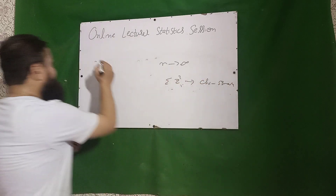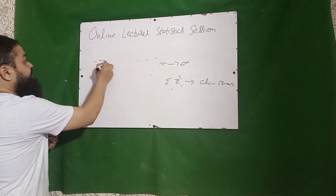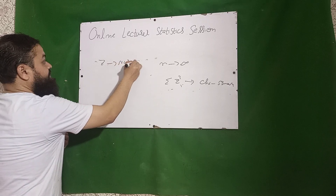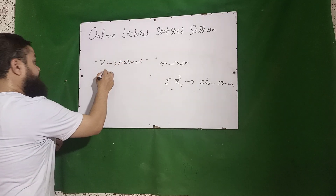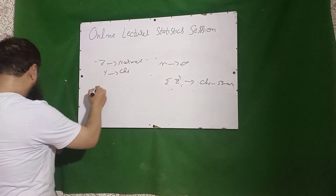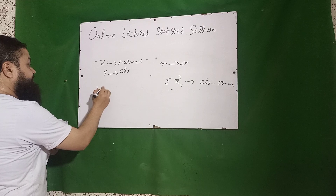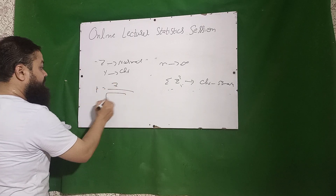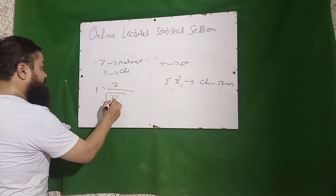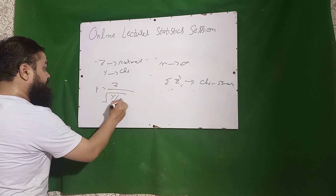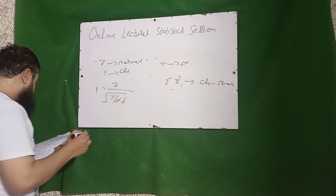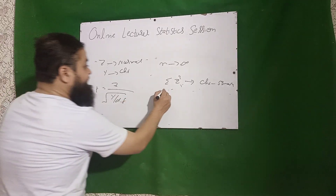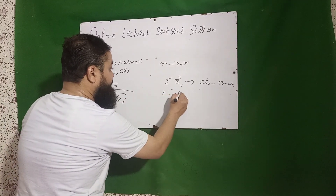Next question: if Z follows normal distribution and Y follows chi-square, then t equals Z over root (Y divided by its degrees of freedom) — a very important result.